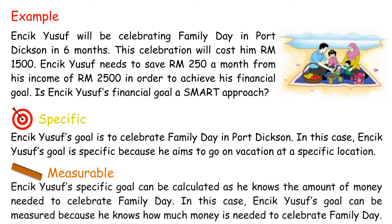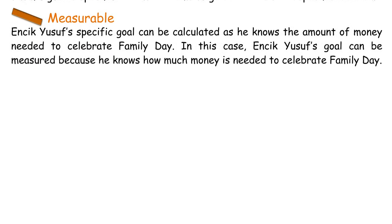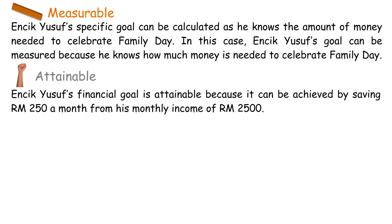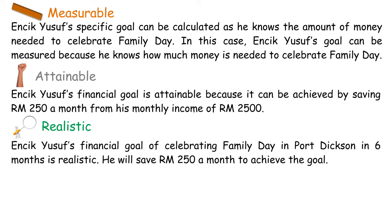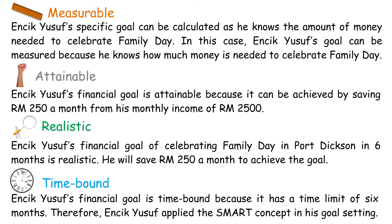Measurable: Nsik Yusuf's goal can be calculated, as he knows the amount of money needed to celebrate Family Day. Attainable: His financial goal is attainable because it can be achieved by saving RM250 a month from his monthly income of RM2,500. Realistic: His goal of celebrating Family Day in Port Dixon in six months is realistic. Time Bound: His financial goal has a time limit of six months. Therefore, Nsik Yusuf applied the SMART concept in his goal setting.